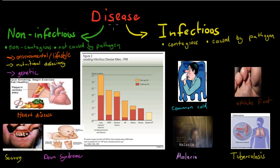But if we talk about disease itself, there are obviously two kinds of diseases that jump into your mind. There's non-infectious and there's infectious. Just because it's called non-infectious doesn't mean it's not dangerous, but there are some differences in terms of how we classify them. Non-infectious diseases are non-contagious, which means we can't catch them, and they're not caused by a pathogen — we'll go over that word in a second.